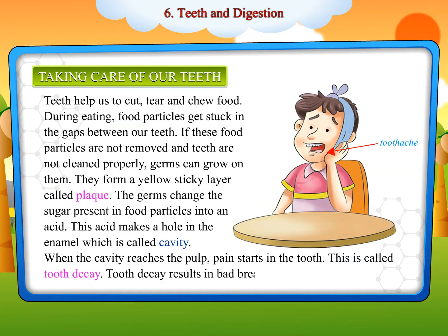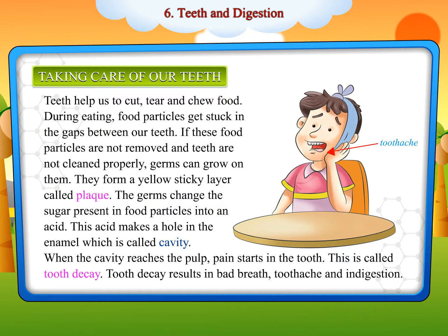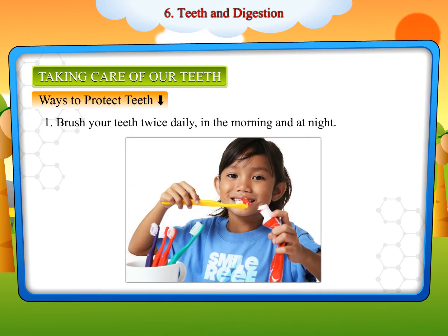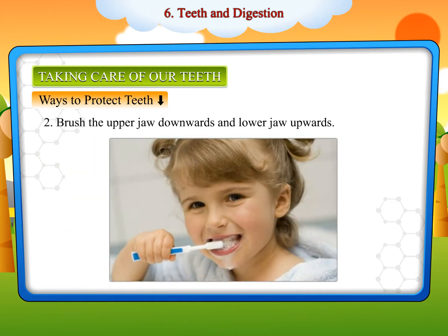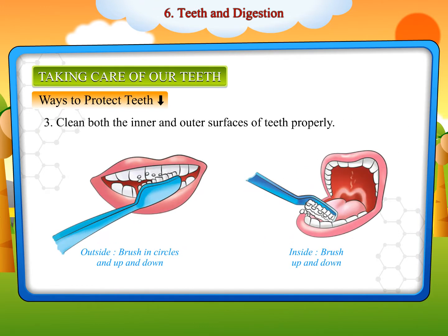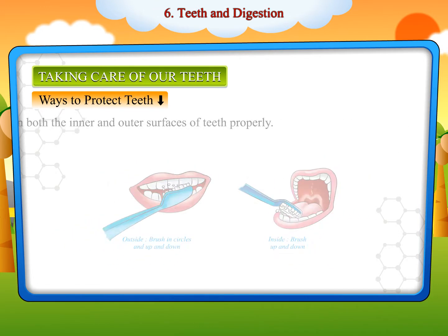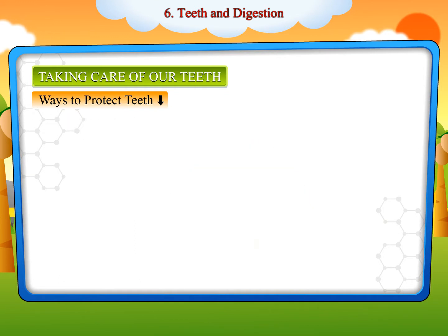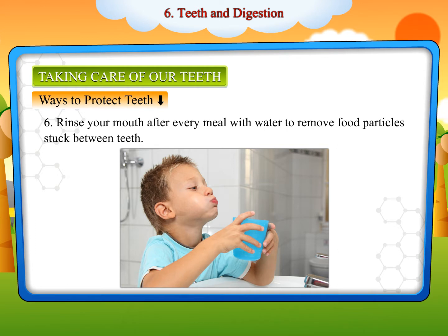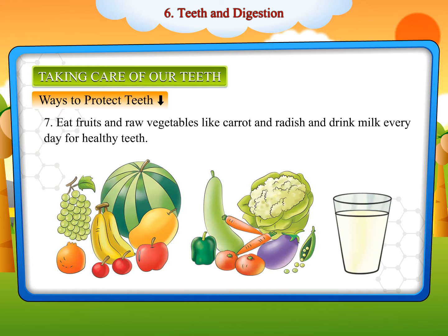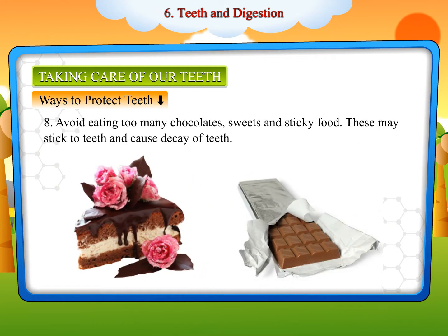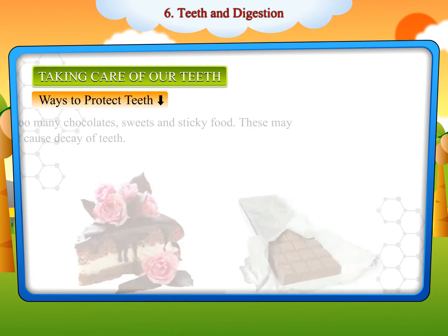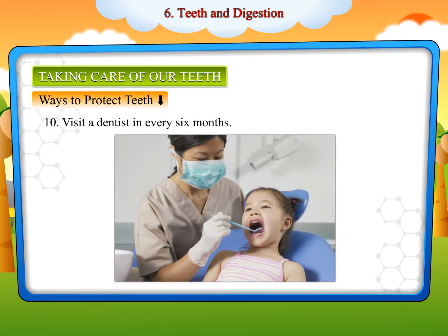Tooth decay results in bad breath, toothache, and indigestion. To protect your teeth: brush your teeth twice daily — in the morning and at night. Brush the upper jaw downwards and the lower jaw upwards. Clean both the inner and outer surfaces of teeth properly. Brush the chewing surfaces of premolars and molars. Floss your teeth daily. Rinse your mouth after every meal with water to remove food particles. Eat fruits, raw vegetables like carrots and radish, and drink milk every day for healthy teeth. Avoid eating too many chocolates, sweets, and sticky food, as these may cause decay. Clean your tongue properly. Visit a dentist every 6 months.